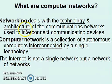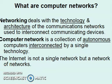What are computer networks? Networking deals with the technology and architecture of communication networks used to interconnect communicating devices. A computer network is a collection of autonomous computers interconnected by a single technology. The internet can be called a network of networks, where hundreds and thousands of networks are connected to each other.